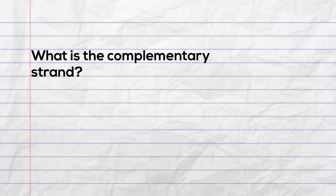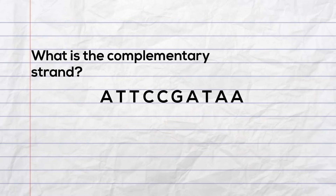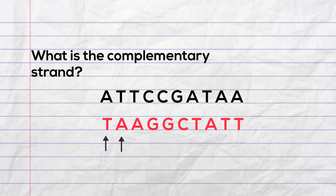Here is our very short strand of DNA. Take a moment and write down the complementary strand of this DNA. Here's what the complementary strand would look like: we would have T, A, A, G, G, C, T, A, T, and then finally one last T.